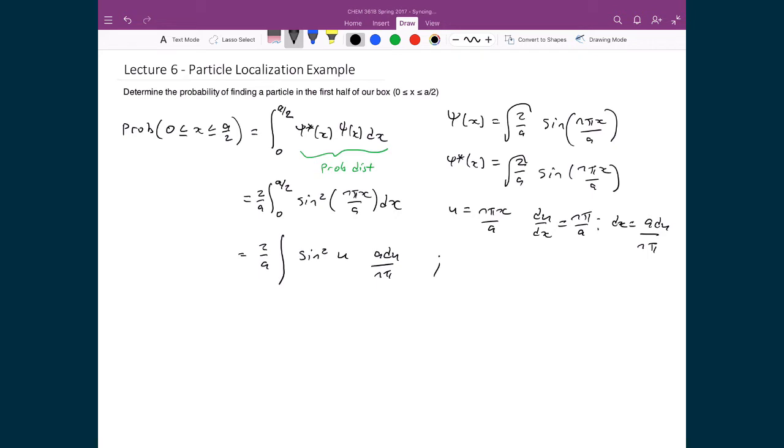Before, when we were talking about our variables being in terms of x, my bounds of integration are between 0 and a over 2. But if I evaluate this integral in terms of my substituted variable, I have to take these bounds of integration, my a over 2 and my 0, plug them into my substituted definition to get new bounds of integration.